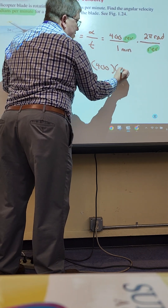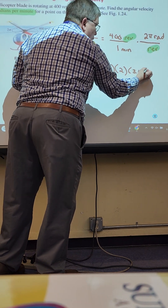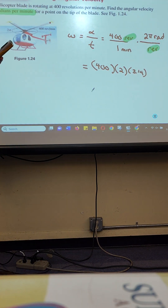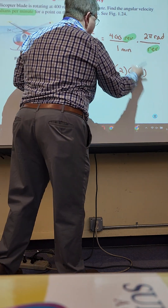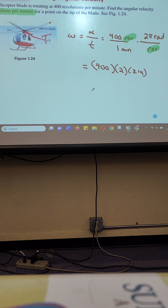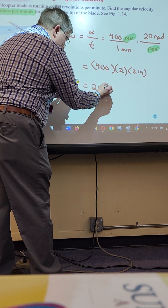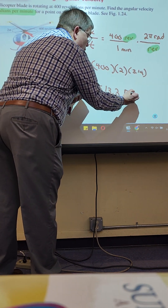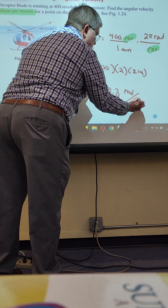It's going to be 400 times 2 times pi. You are going to use the pi button on your calculator, divided by 1. It doesn't tell me what to round to, so we'll go one decimal place. Did y'all get 25,133? So the answer is 25,133.3 radians per minute.